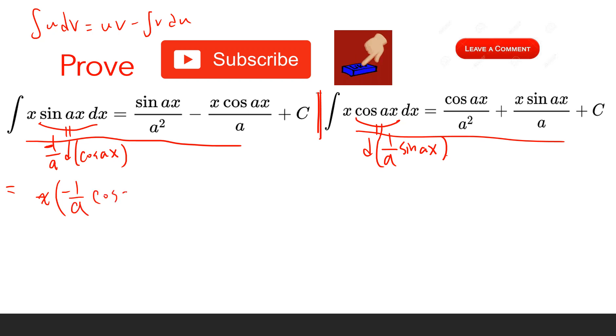So v = -1/a cos ax because the integral of sin ax with respect to x gives -1/a cos ax, and du = dx. For the second integral, we have x times 1/a sin ax minus the integral of 1/a sin ax dx.